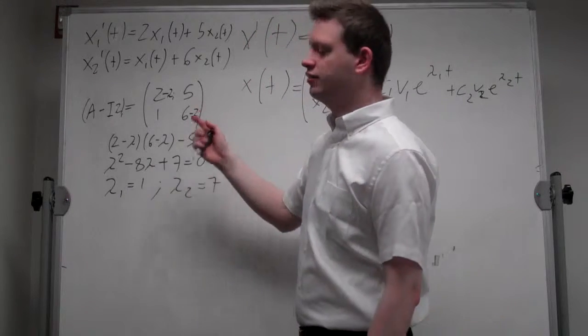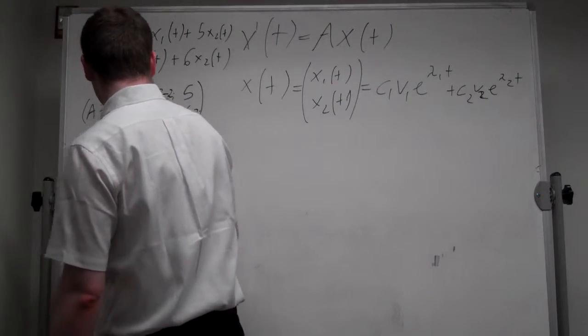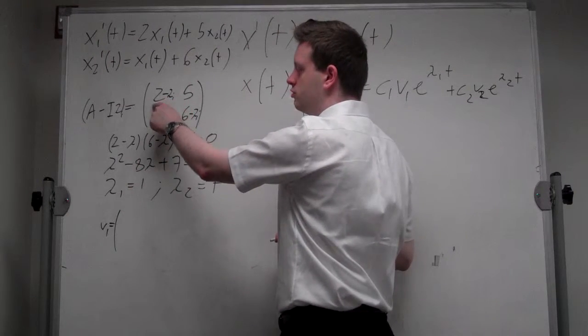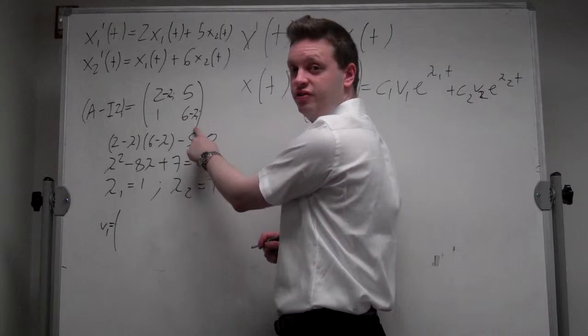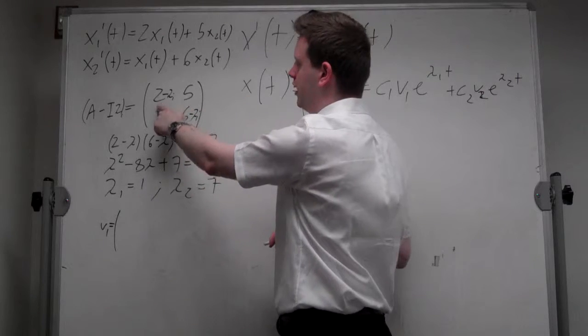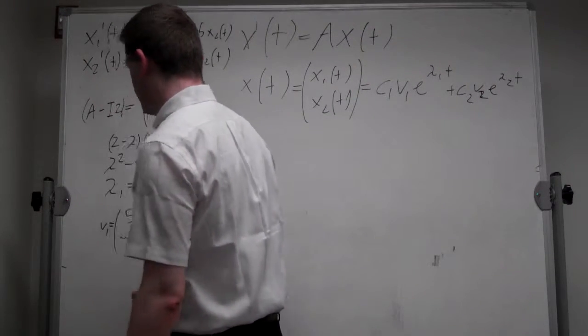Okay, and so we can find the eigenvector 1. The first eigenvalue is 1, so we get the matrix 1, 5, 1, 5. Multiplying the eigenvector 5, minus 1 will give us 0, 0, and we have our first eigenvector.